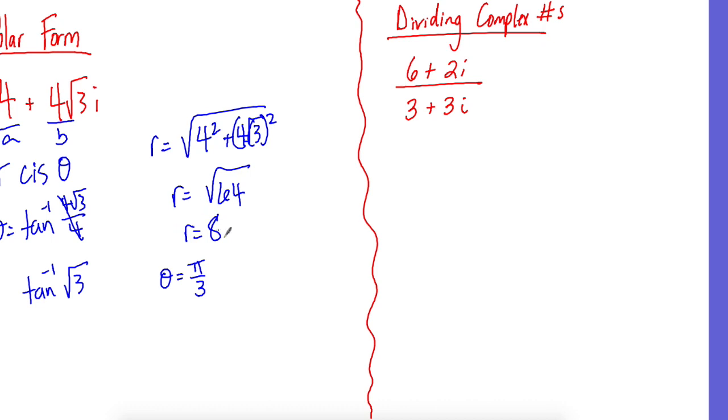So you take those two things and plug it in. Eight cosine plus i sine pi over three, and that's your answer.